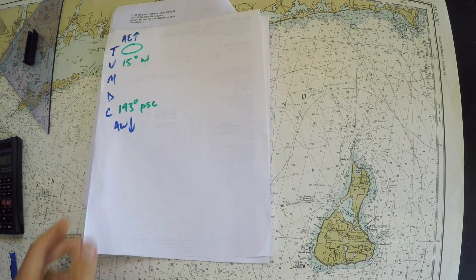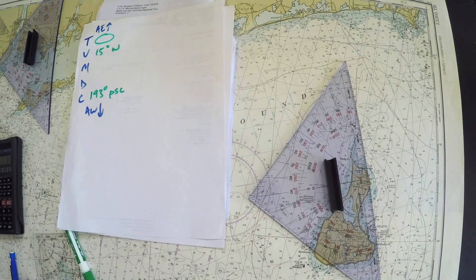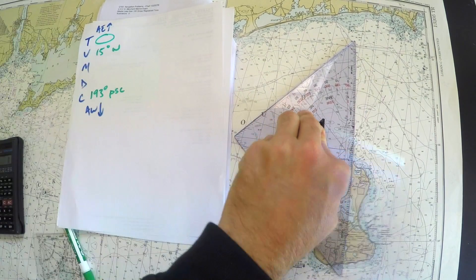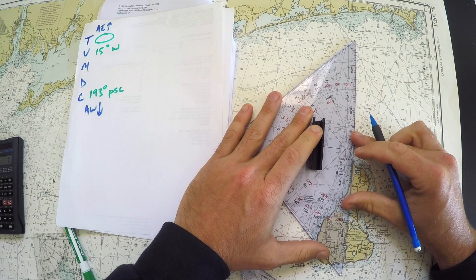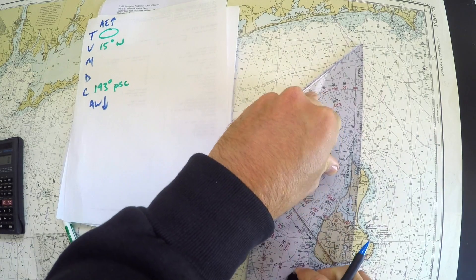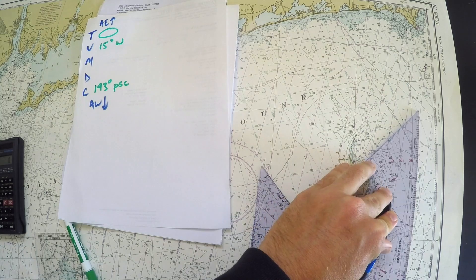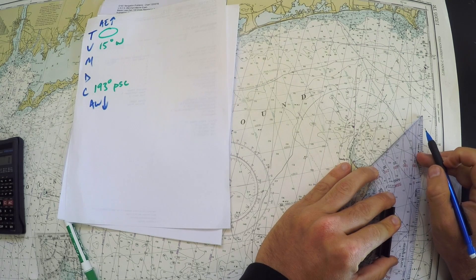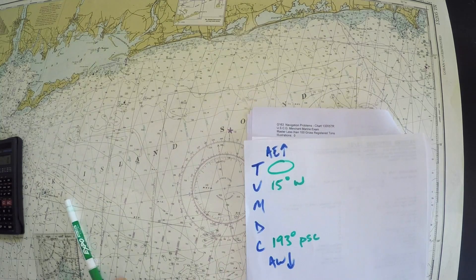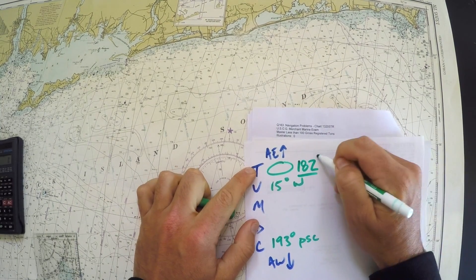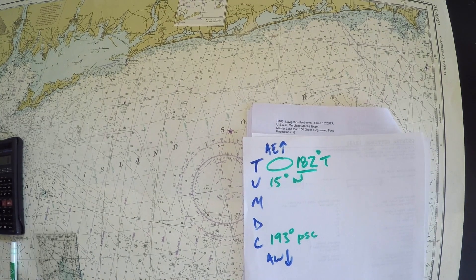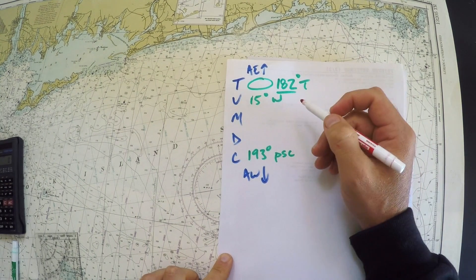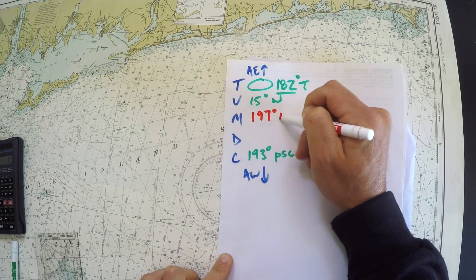I can measure the true bearing by connecting those dots on the chart and sliding over to a meridian to read the angle. I come up with a value of 182 degrees true. So going through the compass correction: adding west in this direction means the magnetic bearing works out to 197 degrees magnetic.